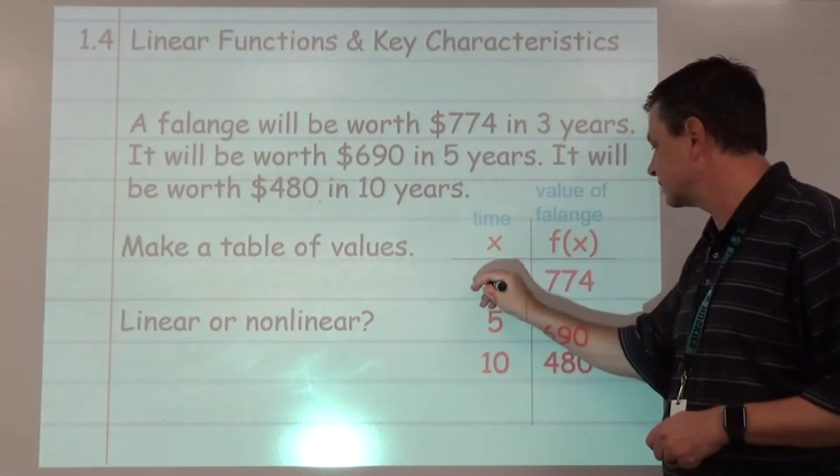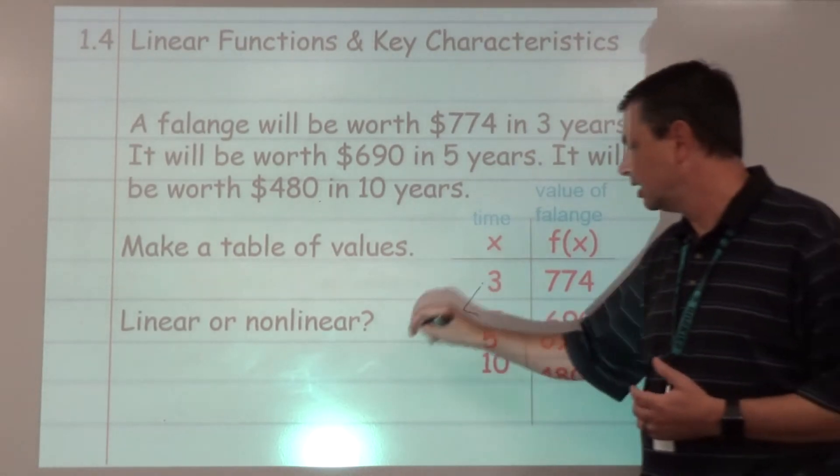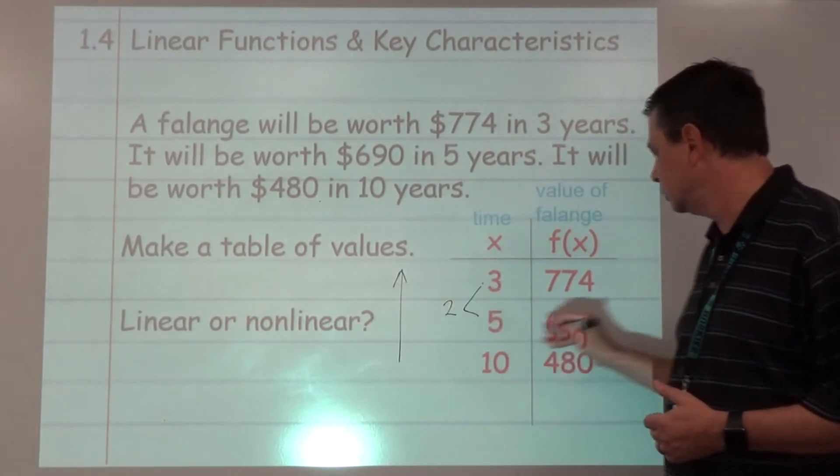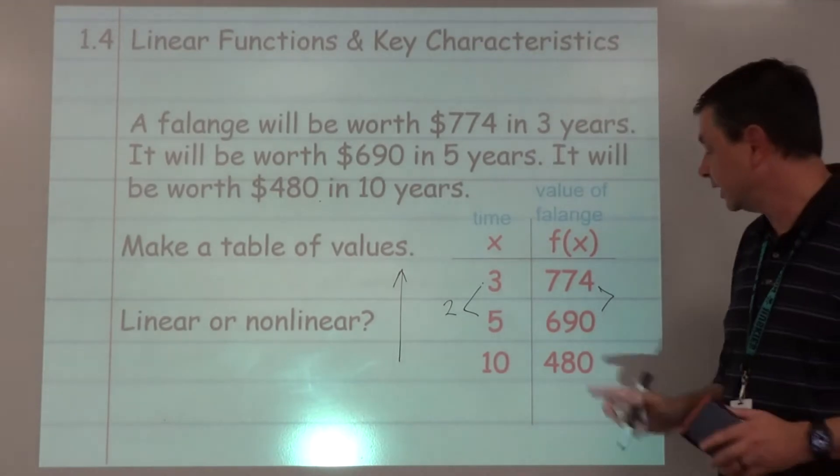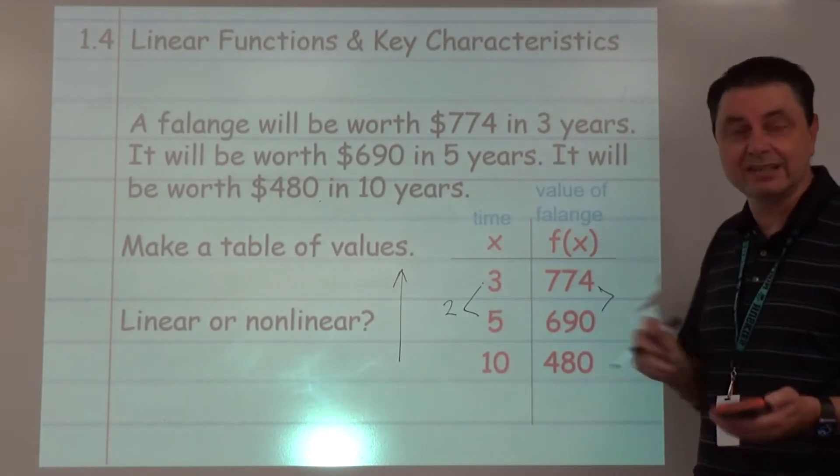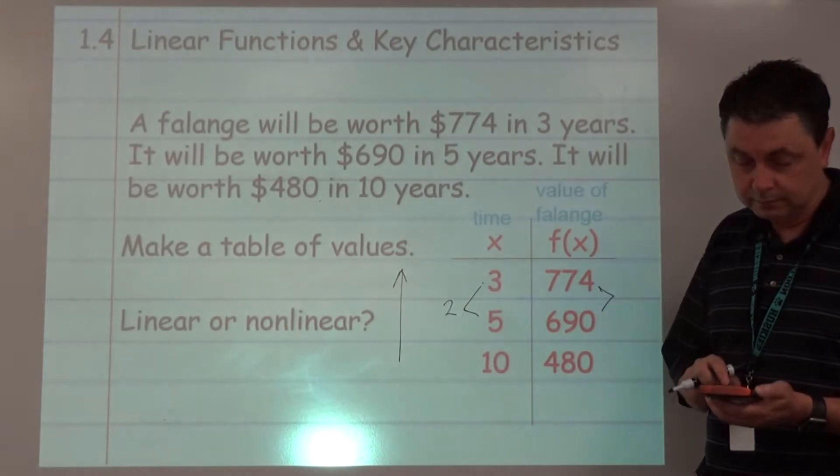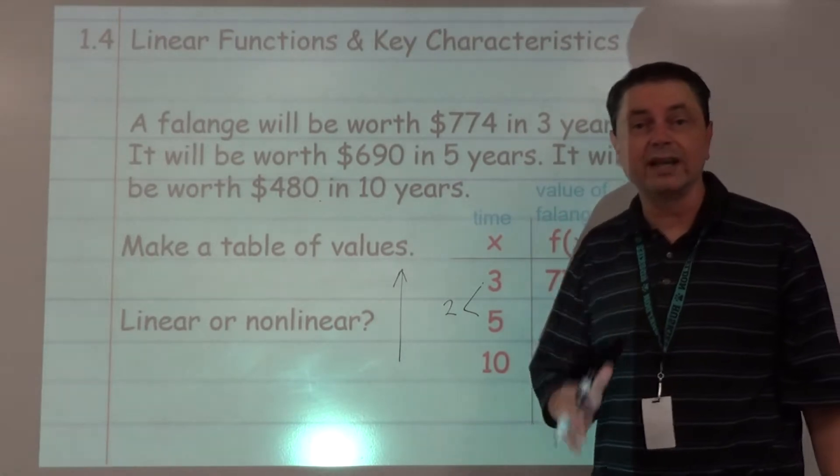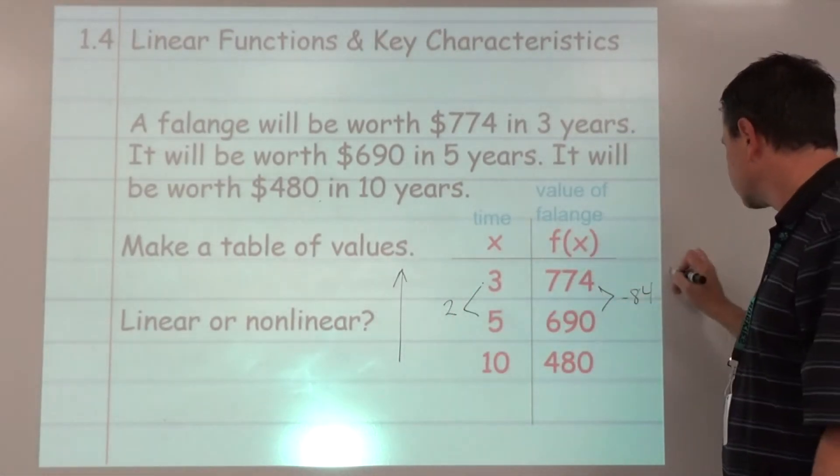We want to calculate differences. When we subtract, do so in the same order. I recommend going up, so 5 minus 3 is 2. Might help to have a calculator, so we're gonna do 690 minus 774, get negative 84. We also want to find the rate of change over that time period.